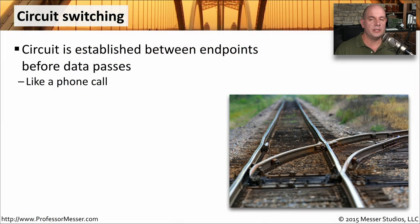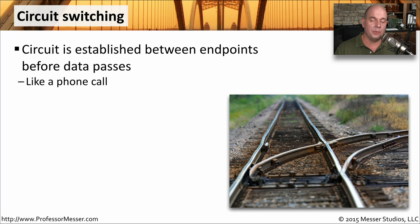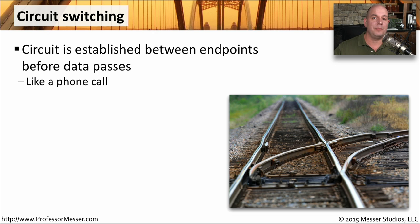With circuit switching, we are building a connection between different locations so that we can then send data over those lines. Things like a phone call use circuit switching. We're picking up the phone, dialing a number, connecting to that site, and sending data. We're not able to talk to anyone else or make any other phone calls until we hang up, and then we establish a new circuit to someone else.